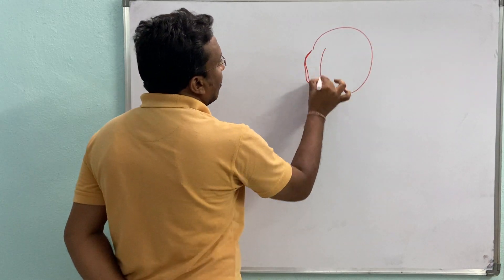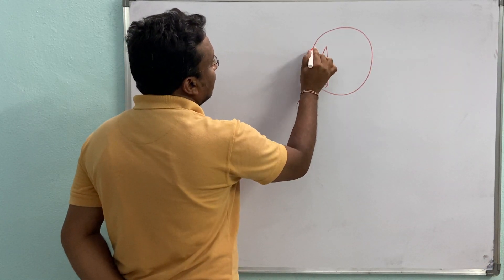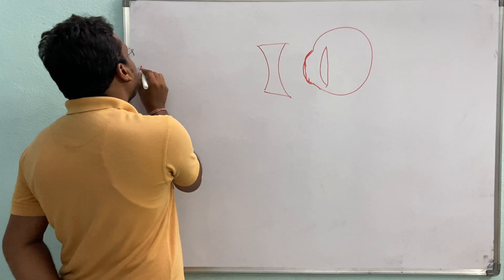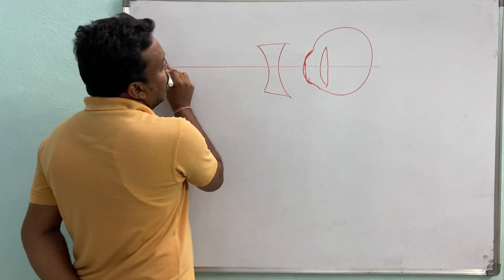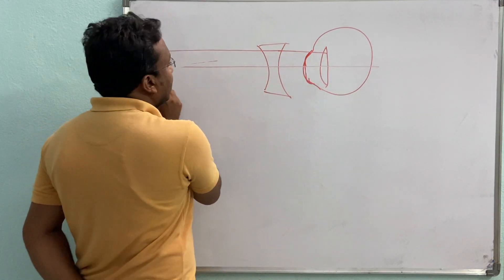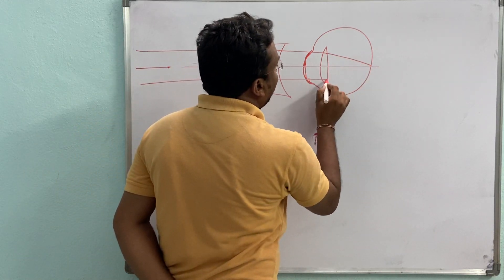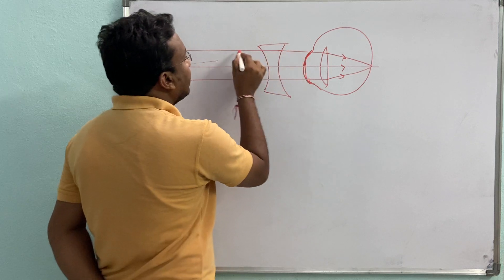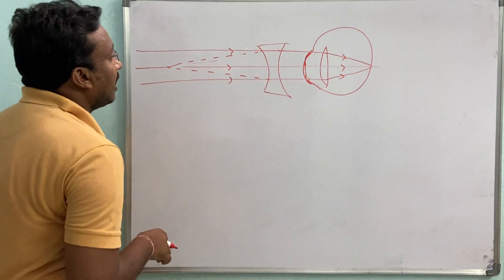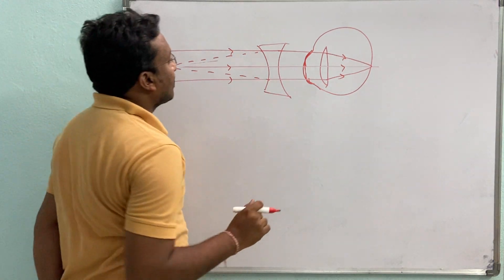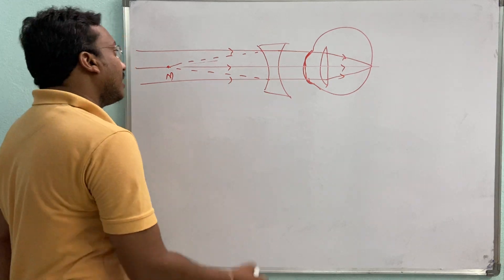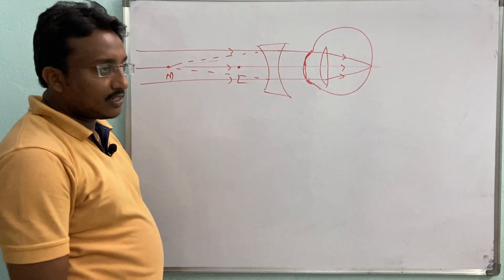This is the eye and this is the convex lens. When the object is at infinity, it forms an image on the retina by using a concave lens. This concave lens brings the image of the object from infinity to a point — the extreme point.